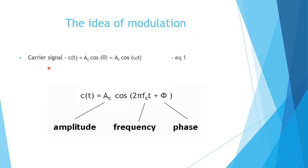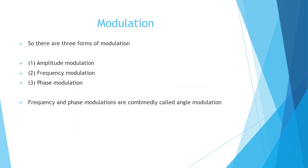There are three parameters of the carrier — amplitude Ac, frequency fc, and phase φ — and we can change any of these according to the message signal (a low-frequency signal) to transmit it from one place to another through a channel. There are three forms of modulation: amplitude modulation, frequency modulation, and phase modulation. Frequency and phase modulation are collectively called angle modulation. In this lecture we will focus on amplitude modulation.